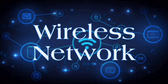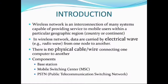We are going to see the topic about wireless network. A wireless network is an interconnection of many systems capable of providing service to mobile users within a particular geographic region. In wireless networks, data are carried by electrical waves from one node to another. There is no physical cable connecting one computer to another.